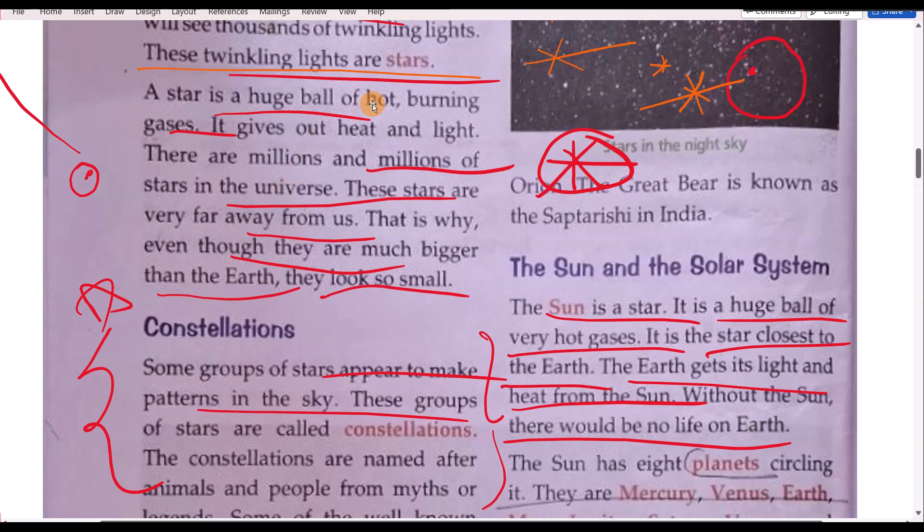A star is a huge ball of hot burning gases. It gives out heat and light. So those are the stars. It means that one is the huge ball of hot burning gases. So stars give out heat and light. Example: sun. Sun is the star.